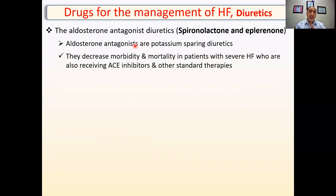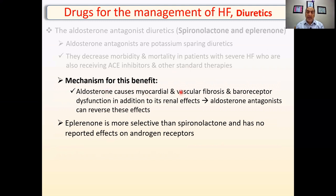Spironolactone and eplerenone are aldosterone antagonists. Aldosterone was involved in cardiac remodeling and sodium and water retention. They decrease morbidity and mortality in patients with severe heart failure who are also receiving ACE inhibitors and other standard therapies. The mechanism for this benefit is that aldosterone itself can cause myocardial and vascular fibrosis and baroreceptor dysfunction, in addition to its systemic effect of sodium and water retention.